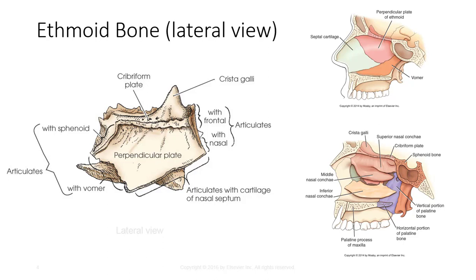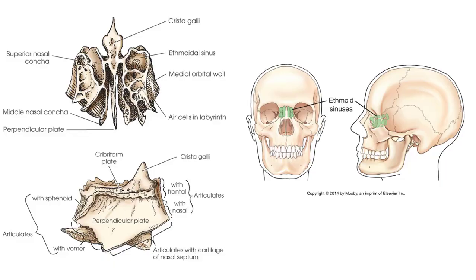The perpendicular plate makes up the vertical portion and forms the superior portion of the bony nasal septum. The labyrinths contain ethmoid sinuses, or air cells, and the walls form part of the medial walls of the orbits and lateral walls of the nasal cavity. The labyrinths have two thin scroll-shaped projections called conchae, which include the superior and middle nasal conchae.